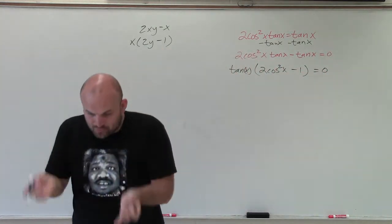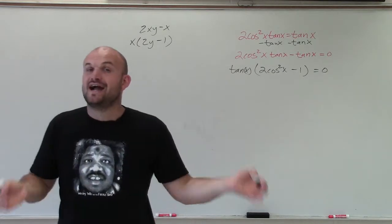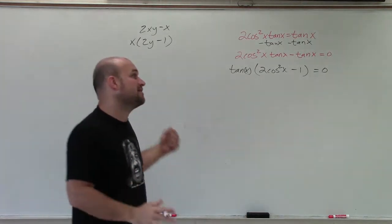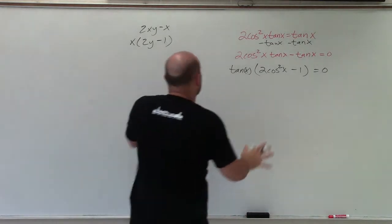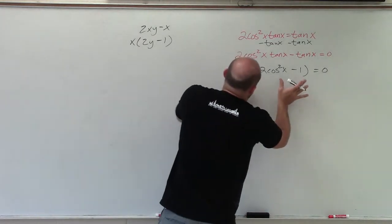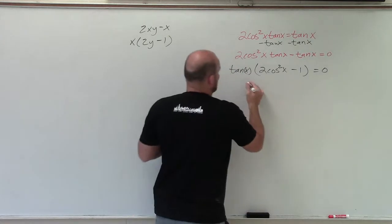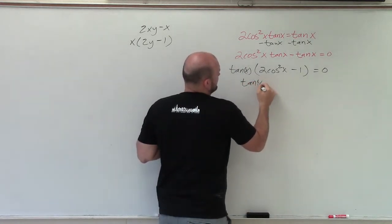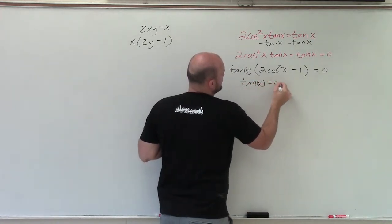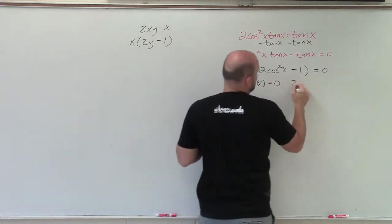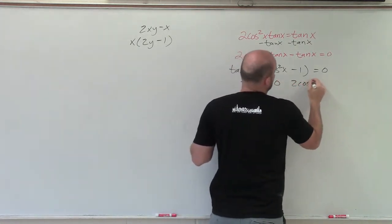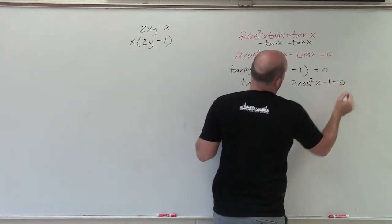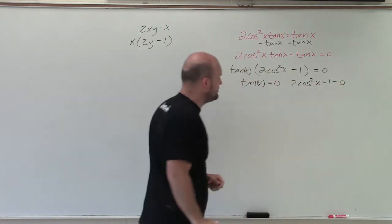Now I have a product of factors equal to 0, so I can apply the zero product property. That means tangent of x equals 0, or 2 cosine squared of x minus 1 equals 0.